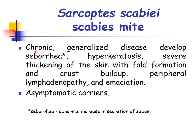Dogs with chronic generalized disease develop seborrhea, which is an abnormal increase in the secretion of sebum. There is also hyperkeratosis, severe thickening of the skin with fold formation and crust buildup, peripheral lymphadenopathy (enlargement of the lymph nodes), and emaciation. Asymptomatic carriers are also common for the scabies mite — these are animals that are apparently healthy but carry the parasite.